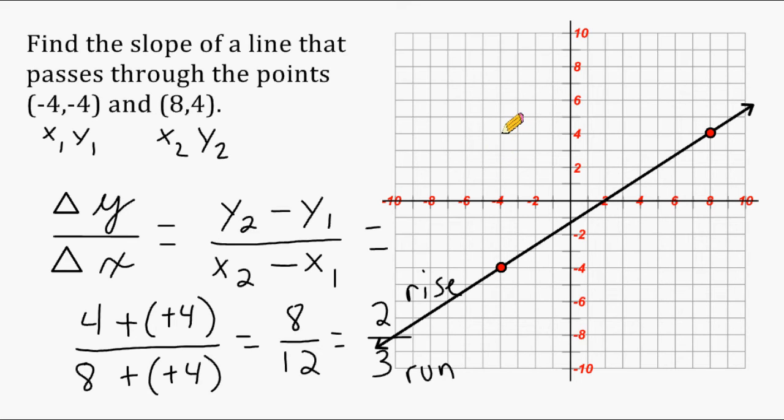And from this point, we would move to the right. That would be our run. So starting here, which would be 0 to here would be 1, 2, 3, 4, 5, 6, 7, 8, 9, 10, 11, 12.